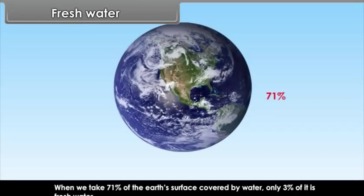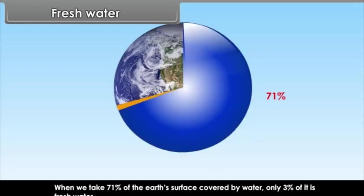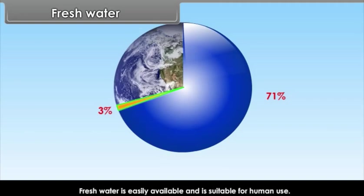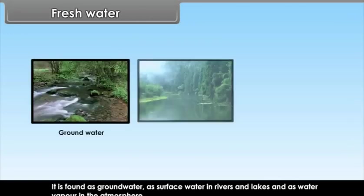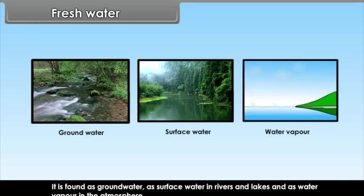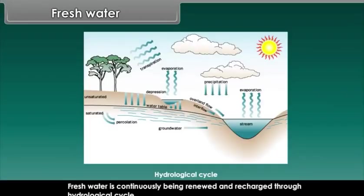Fresh water. When we take 71% of the earth's surface which is covered by water, only 3% of it is fresh water. Fresh water is easily available and is suitable for human use. It is found as groundwater, as surface water in rivers and lakes, and as water vapor in the atmosphere. Fresh water is continuously being renewed and recharged through the hydrological cycle.